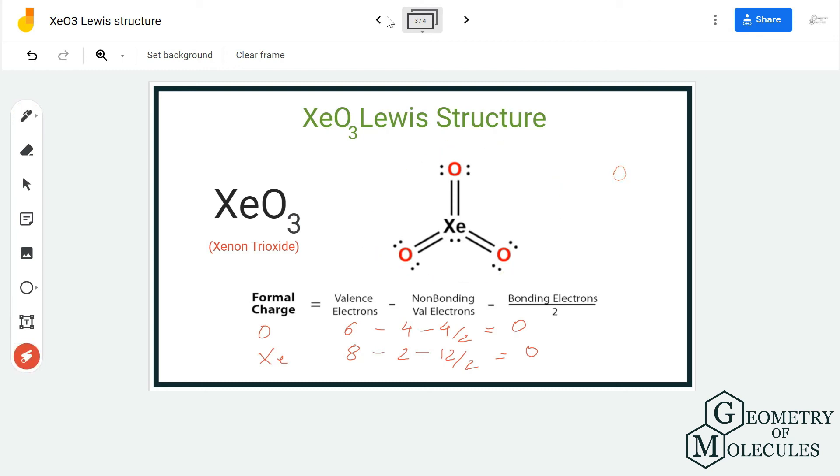So here all these atoms have a formal charge of zero, and hence this is the Lewis structure for xenon trioxide. Remember to check the formal charges for all atoms when you are not confident about the structure, because at first it might seem that the Lewis structure we had come up with earlier might be the correct one, but calculating the formal charges we got to know that due to the formal charges present in the previous structure, it was not relevant.